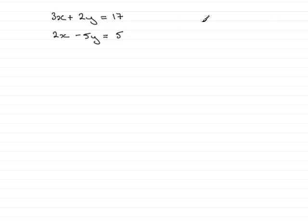So how do we do this? Well, like all simultaneous equations, let's make sure we start by numbering the equations. Now, if we decide that we want to eliminate the x terms, they've got to be the same. But we can clearly see that they're not.